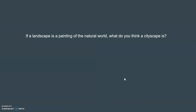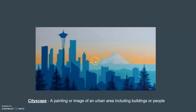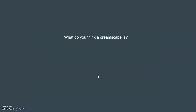If a landscape is a painting of the natural world, a cityscape would have geometric shapes and buildings. This is a cityscape — you can see all the buildings. Does anybody know what city this is? It's actually Seattle. Seattle has the Space Needle, and there are only two cities with a Space Needle: Seattle and Toronto. Since Toronto doesn't have mountains around it, we know this is Seattle.